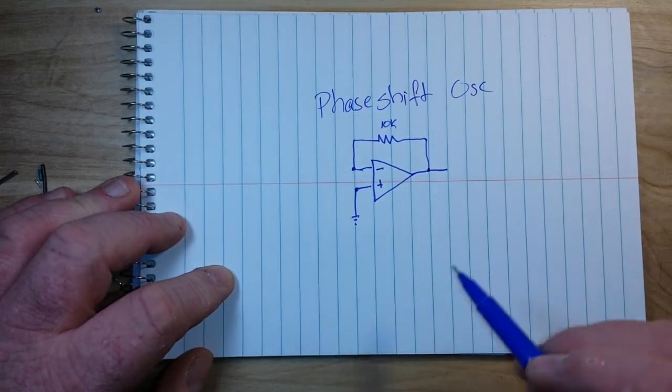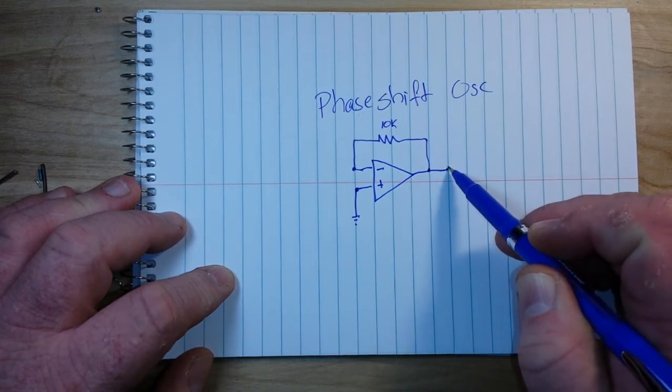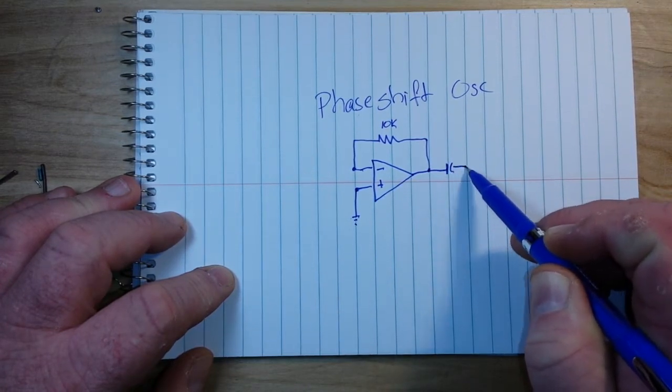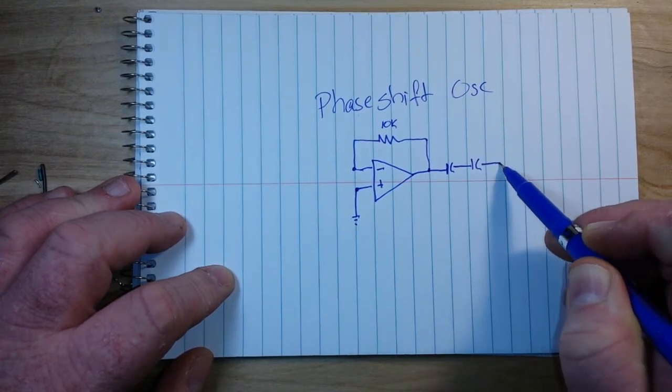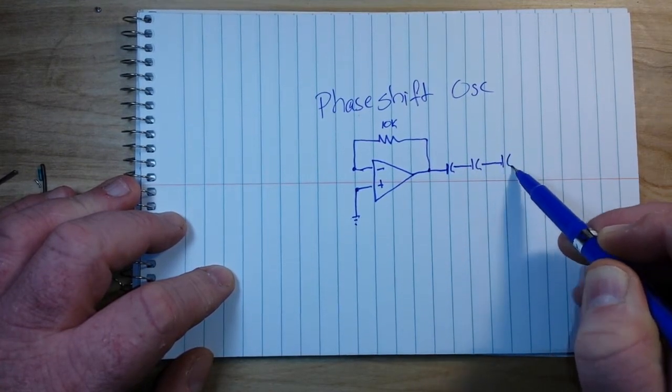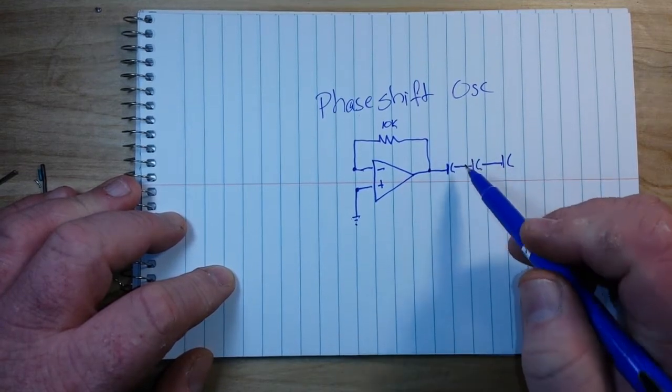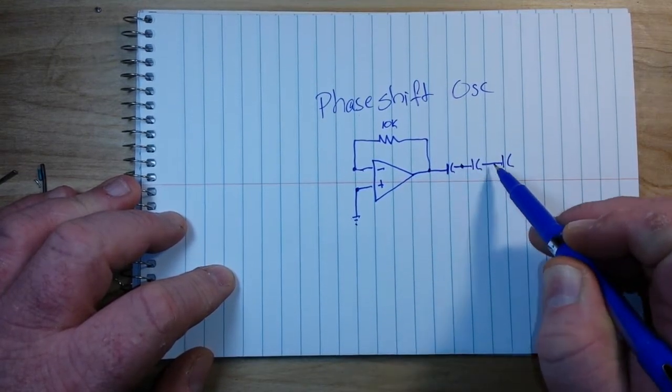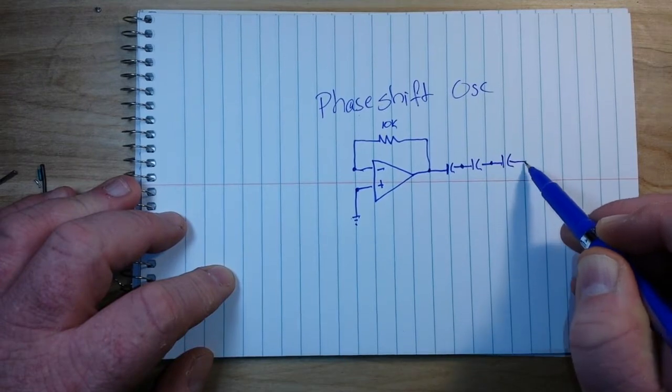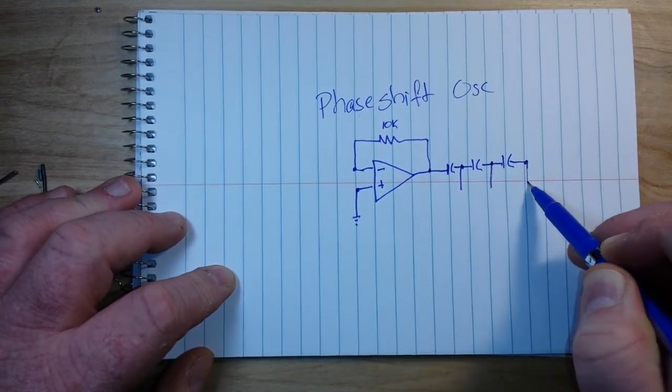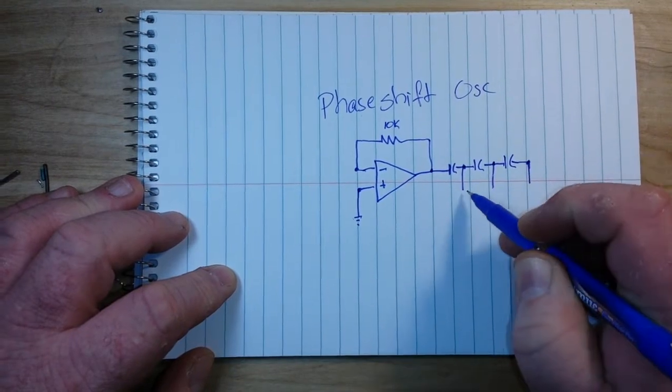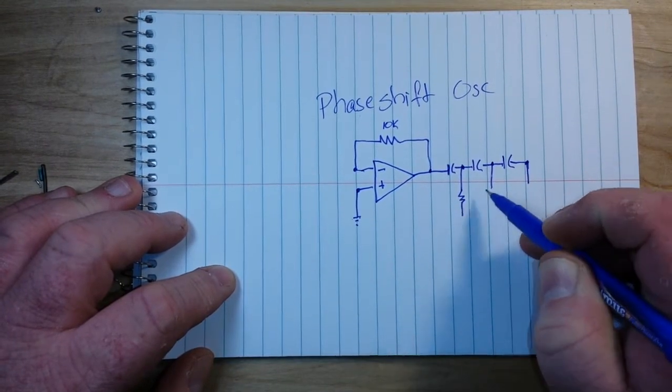And we are also going to run three resistors in parallel to ground.